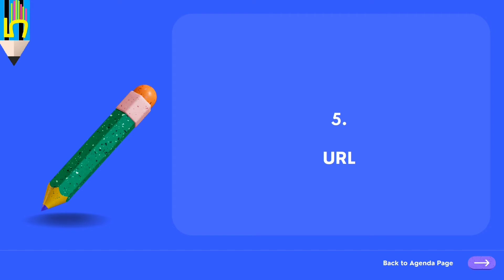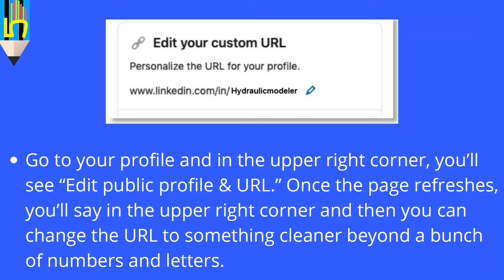Next is your profile URL. If someone wants to find you on LinkedIn, one way is by your name, and another is through your direct URL. For example, a URL like 'www.linkedin.com/in/hydraulic-modeler' will directly point to your profile. Having a relevant keyword in your URL increases your chances of ranking for that term. To change it, go to your profile and click 'Edit public profile and URL' in the upper right corner. After changing it, it takes two to three days to reflect in rankings.